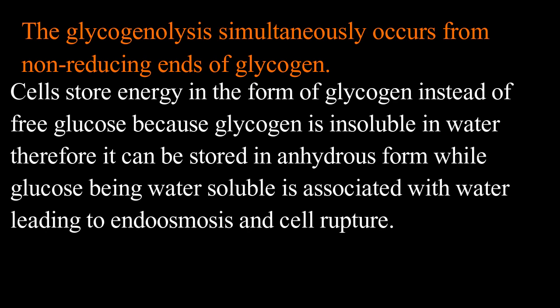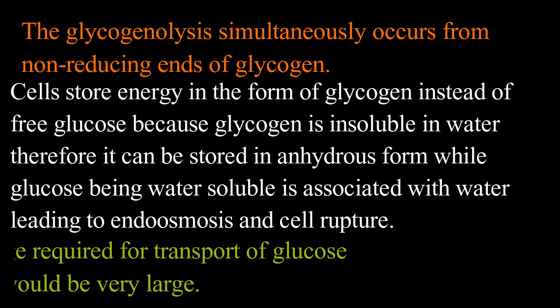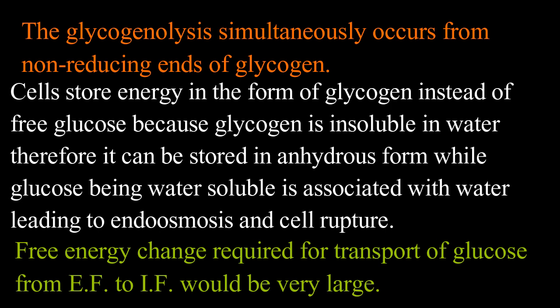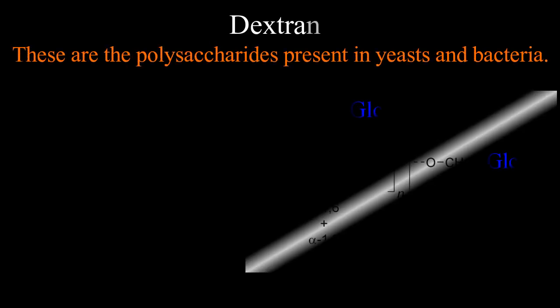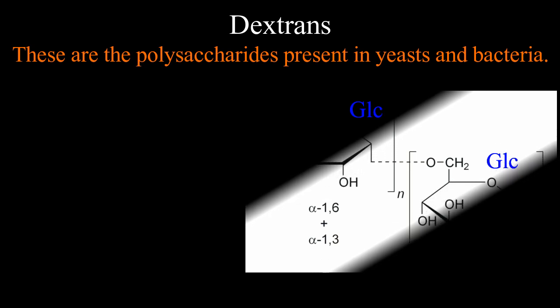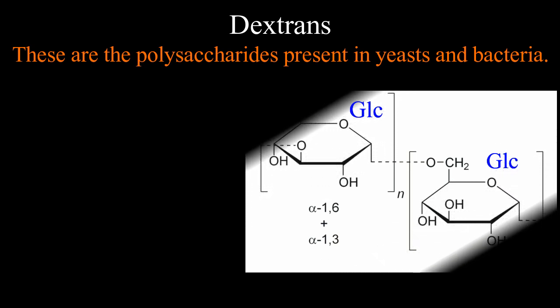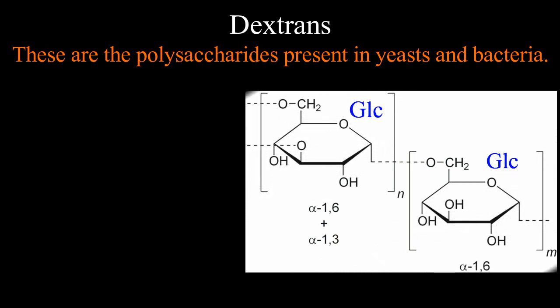Cells store energy in the form of glycogen instead of free glucose because glycogen is insoluble in water; therefore it can be stored in an anhydrous form. Glucose, being water-soluble, is associated with water, leading to endosmosis and cell rupture. Also, the free energy change required for transport of glucose from extracellular fluid to intracellular fluid would be very large.